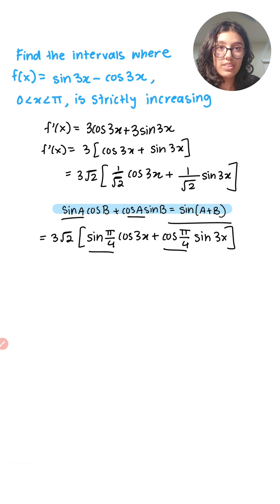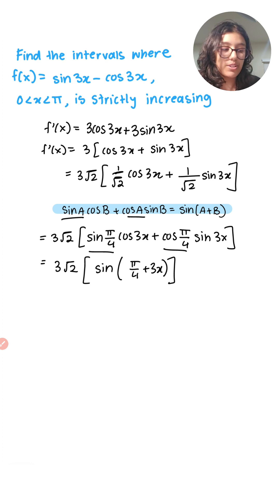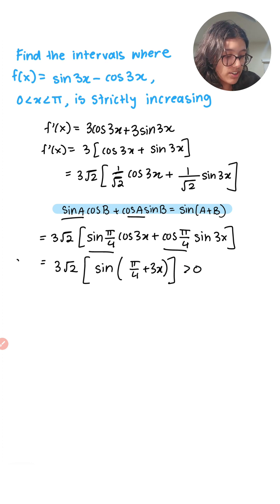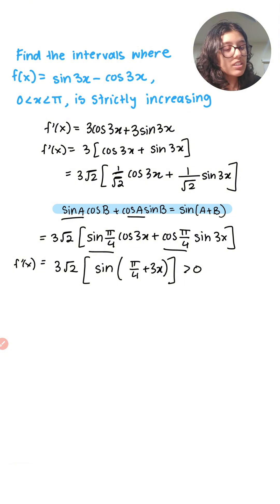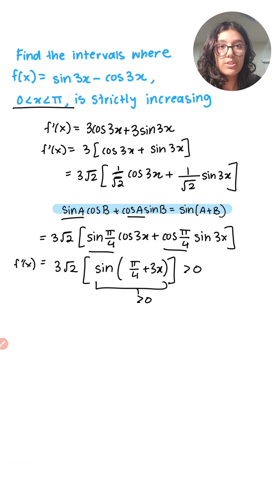This way we can substitute that into the right side of the equation to get — great, we've made it into one trigonometric equation. This has to be greater than zero because the function is strictly increasing. Basically, this expression has to be greater than zero, going back to the original condition where x has to be between zero and pi.